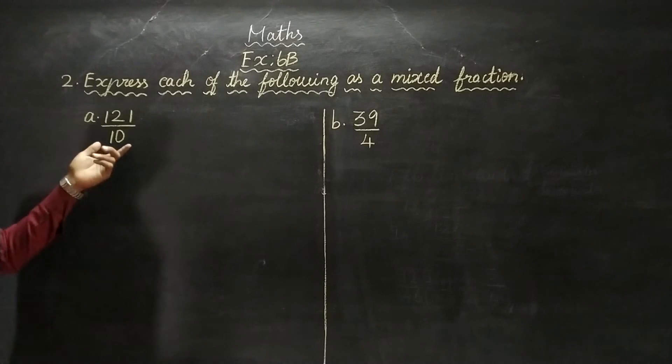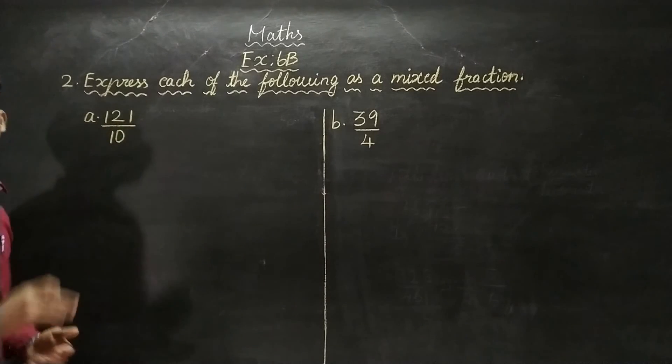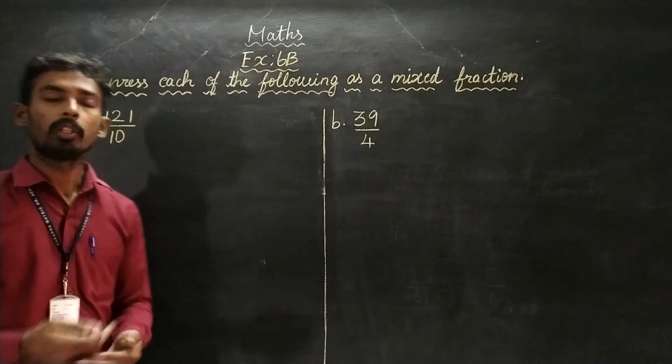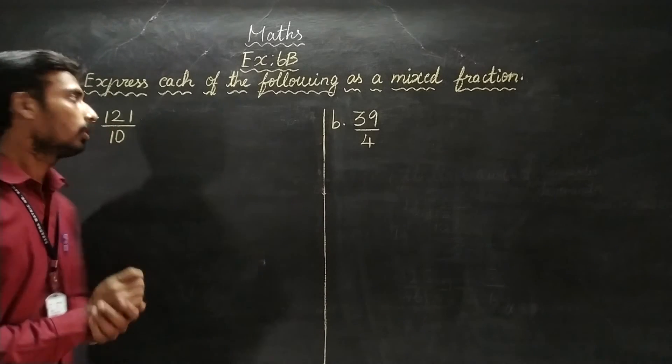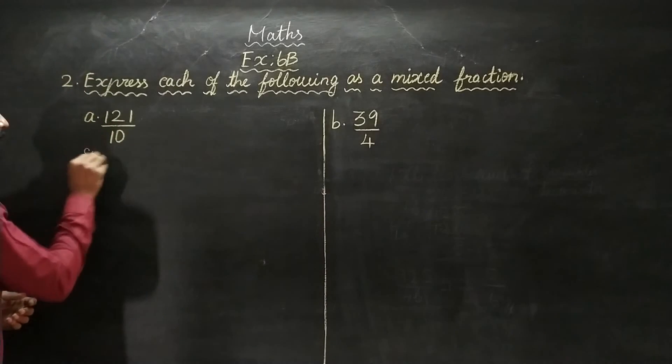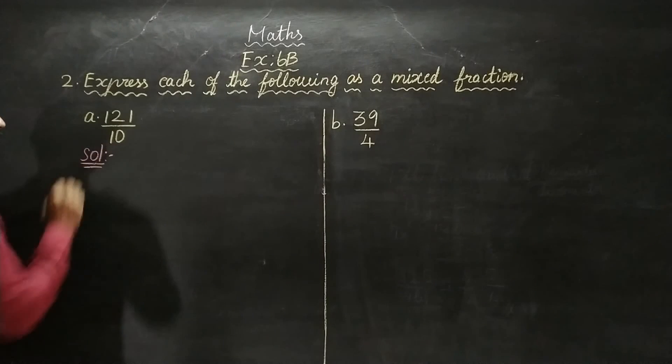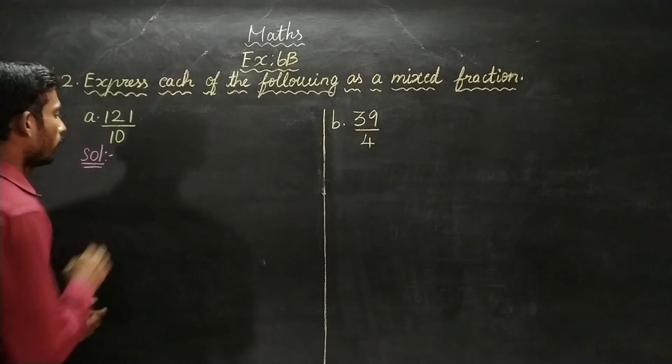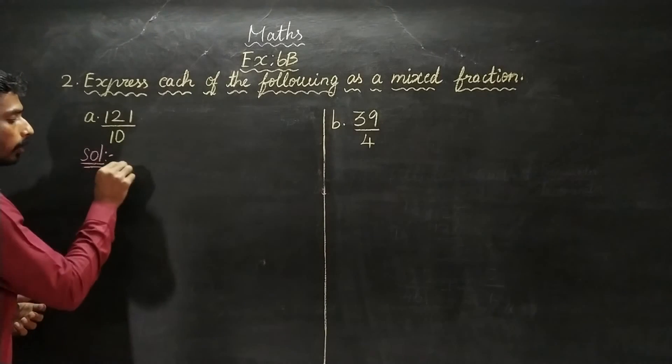First, part A is 121 by 10. This is an improper fraction. We need to find the mixed fraction answer, so we can solve this. Mixed fraction equals...